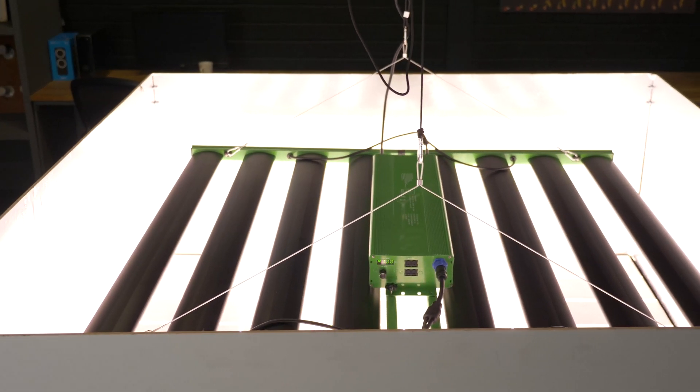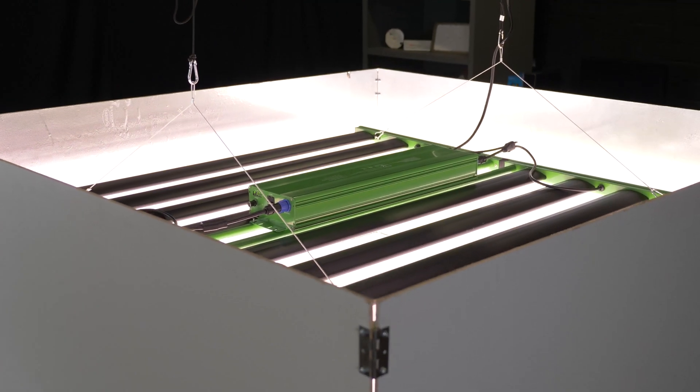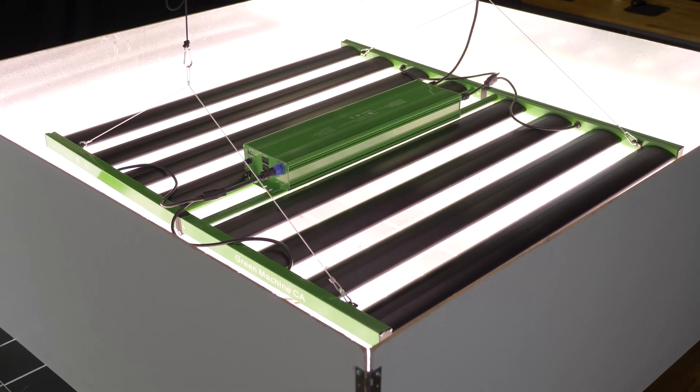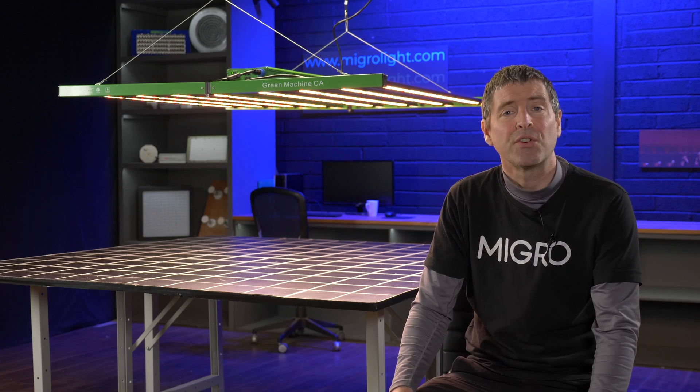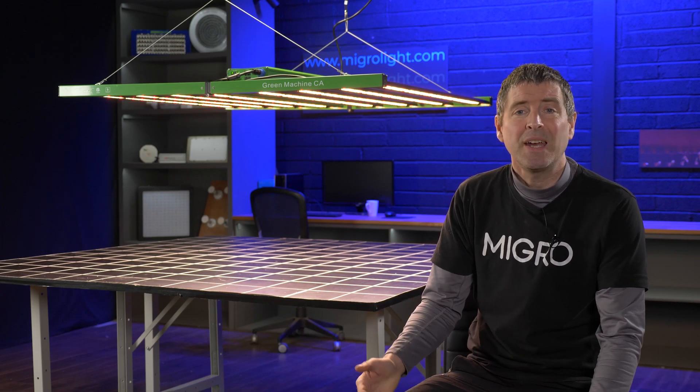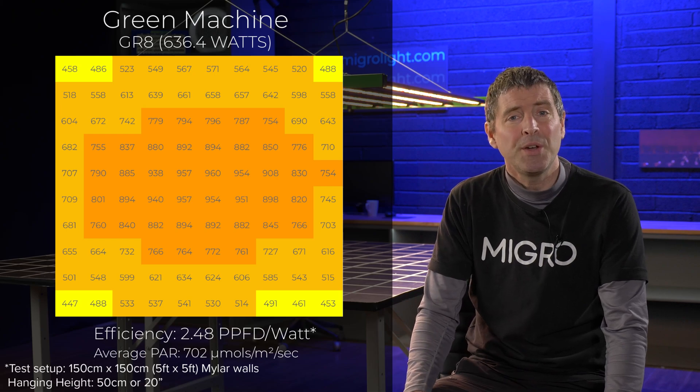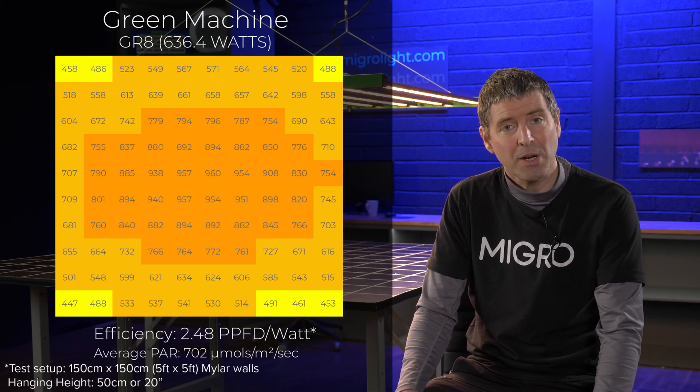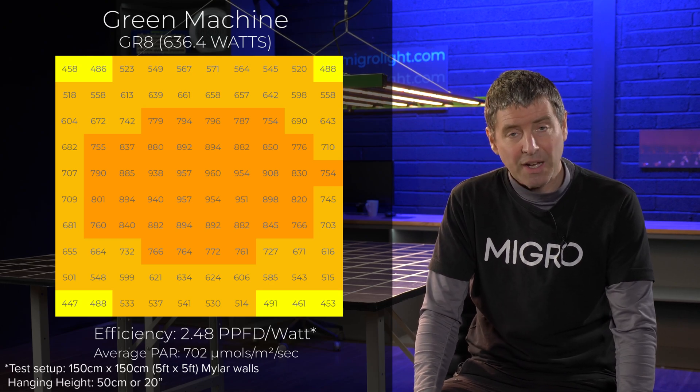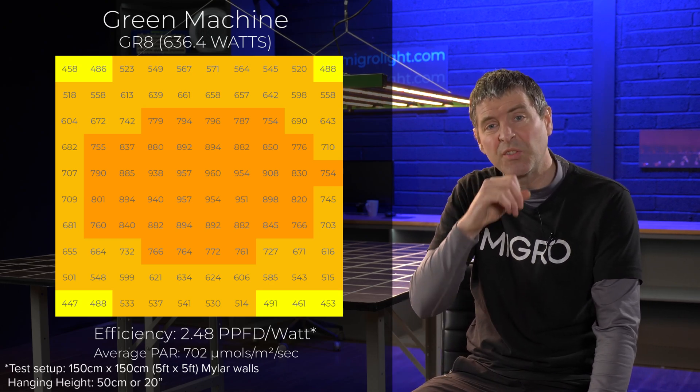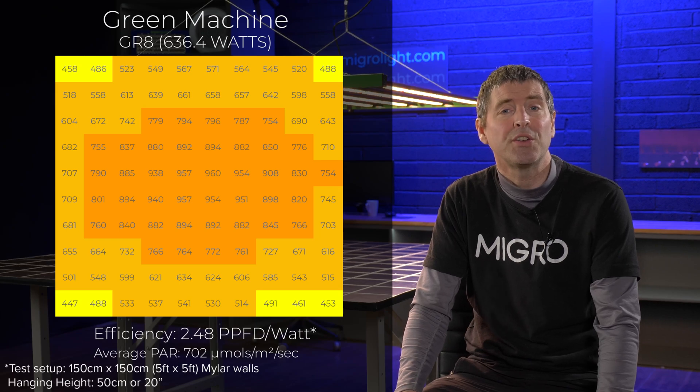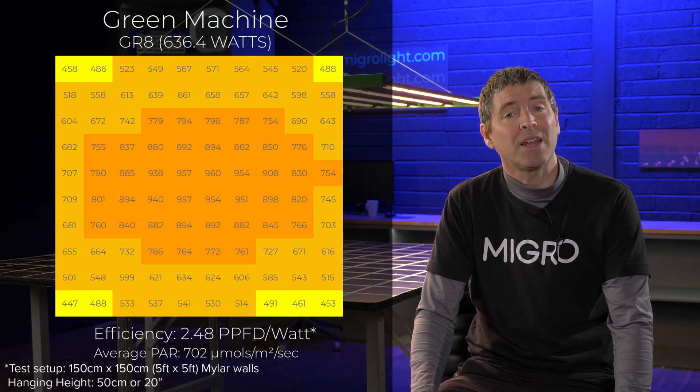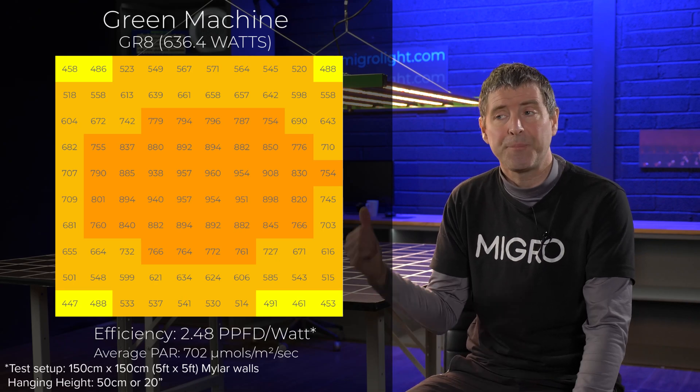I also set it up in a five by five. In this larger area, you need to hang the light a little bit higher just to get that even spread. So I hung at 20 inches or 50 centimeters. And again, gave a really nice output, a high average power of 700 micromoles per meter square per second, and an efficiency of 2.48 micromoles per watt, which is really high class leading efficiency for this light.